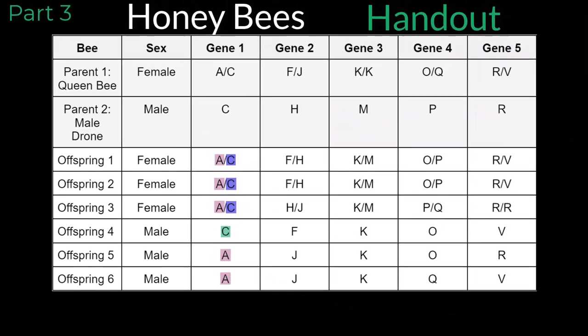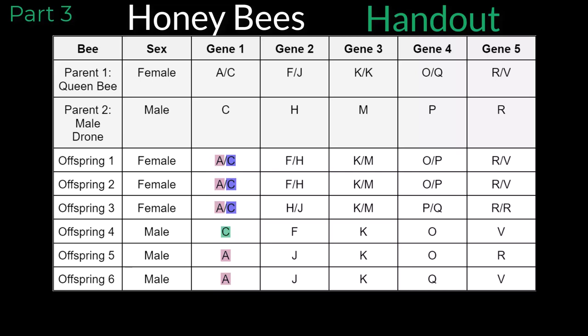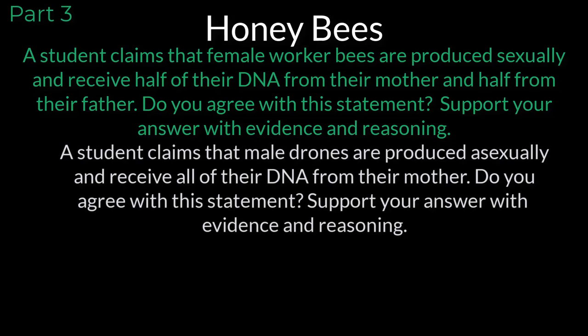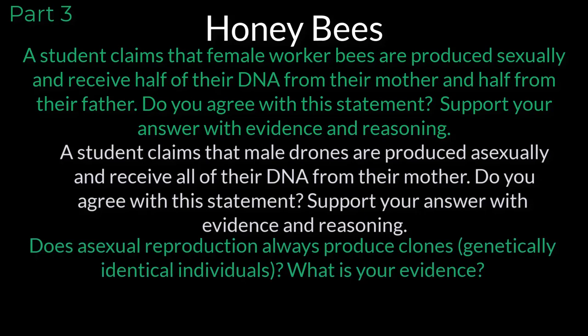Once your alleles are all color coded, use them to answer the following questions. A student claims that female worker bees are produced sexually and receive half of their DNA from their mother and half from their father. Do you agree with this statement? Support your answer with evidence and reasoning. A student claims that male drones are produced asexually and receive all of their DNA from their mother. Do you agree with this statement? Support your answer with evidence and reasoning. Does asexual reproduction always produce clones or genetically identical individuals? What is your evidence?